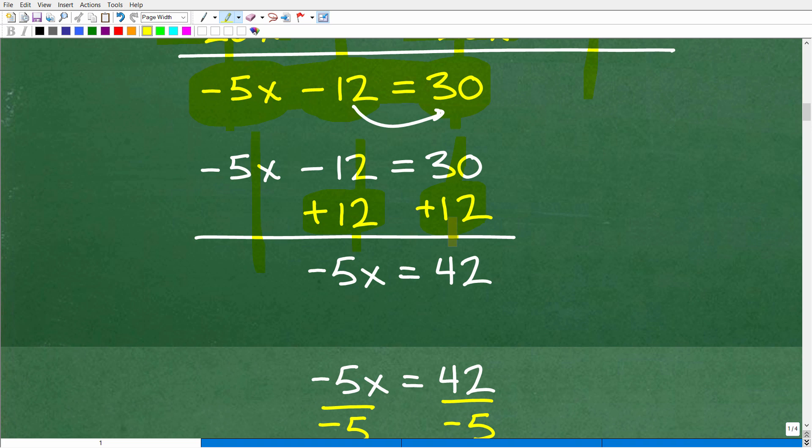Notice I'm writing everything out step by step. This is exactly the way you want to do this stuff. So you and your teacher can read each step and double check as you go. All right, so -5x plus nothing is -5x. -12 + 12 is zero. 30 + 12, of course, is 42.